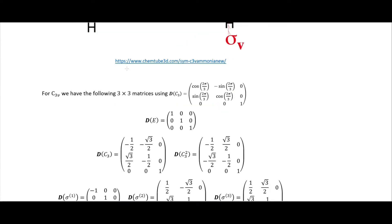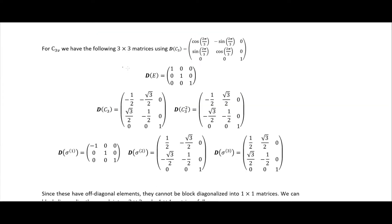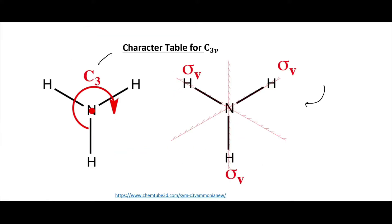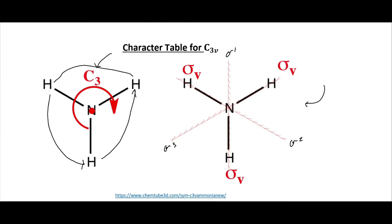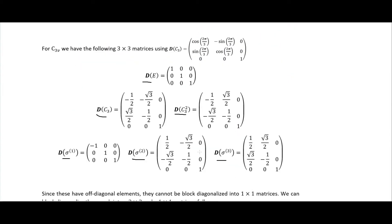We start by getting our 3x3 matrix representations. We have our identity, our C3 and C3² matrices for the rotations, and our three reflections — Sigma1, Sigma2, and Sigma3 — as reflection planes going in and out of the screen. Those are what these matrices are representing.